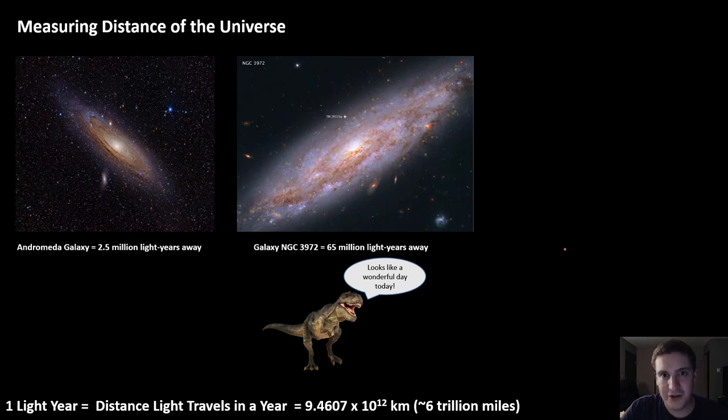I think this serves as a really good example of how this phenomena of being able to peer into the past based off of the amount of time it takes for light to travel actually occurs. So if we were living on NGC 3972, and let's say we could develop a telescope that would be able to look at the Earth, we would be getting a snapshot of us from 65 million years ago. So we would be seeing the dinosaurs, and unfortunately, the extinction of the dinosaurs.